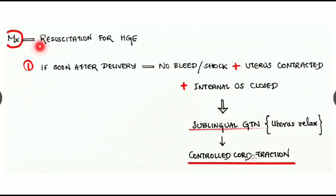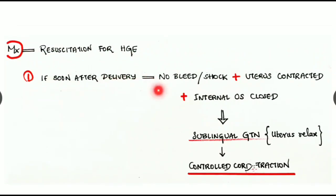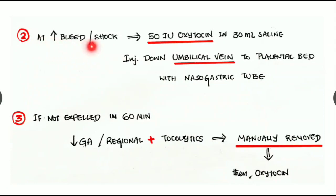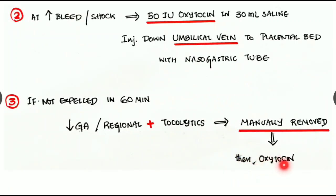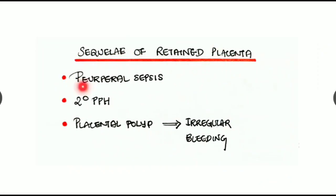Management of retained placenta: give resuscitation for hemorrhage. If soon after delivery there is no bleeding, no shock, uterus contracted, and internal os closed, give sublingual GTN (glyceryl trinitrate), a uterine relaxant, followed by controlled cord traction. If there is heavy bleeding or shock, give 50 intravenous units of oxytocin in 30 ml saline injected down the umbilical vein to the placental bed. If not expelled within 60 minutes, manually remove the placenta under general or regional anesthesia with tocolytics, followed by oxytocin infusion. Sequelae include puerperal sepsis, secondary PPH, or placental polyp presenting as irregular bleeding.